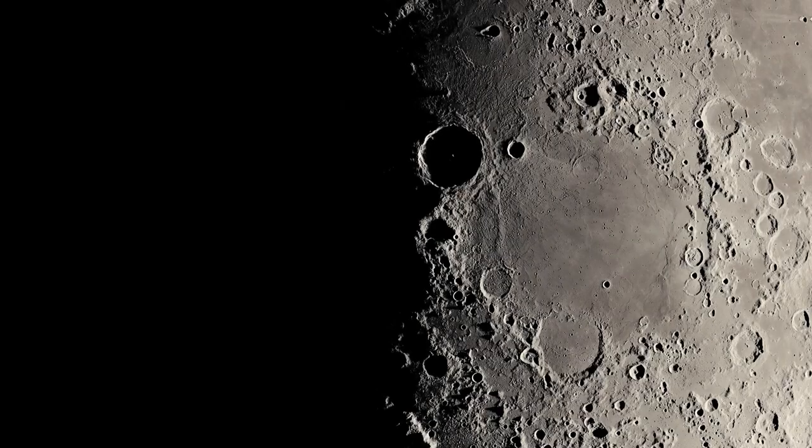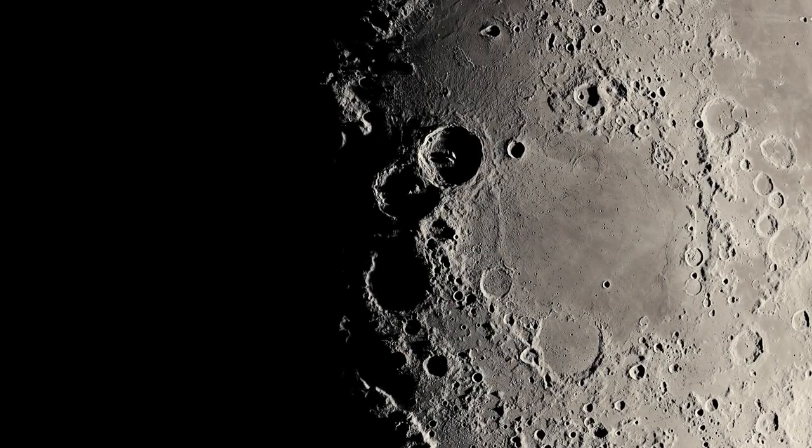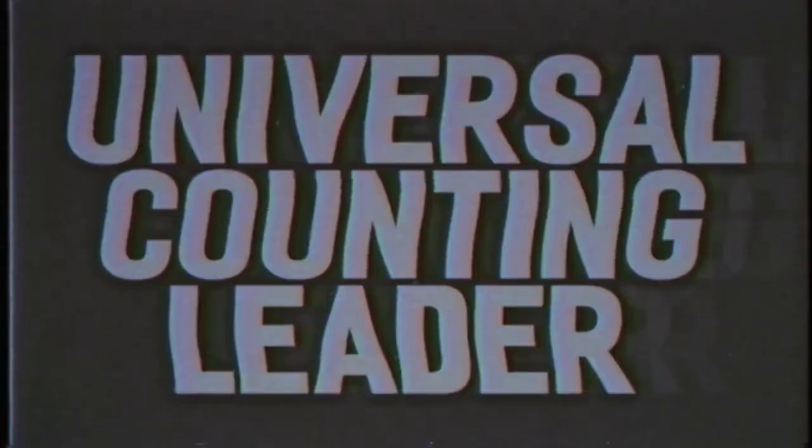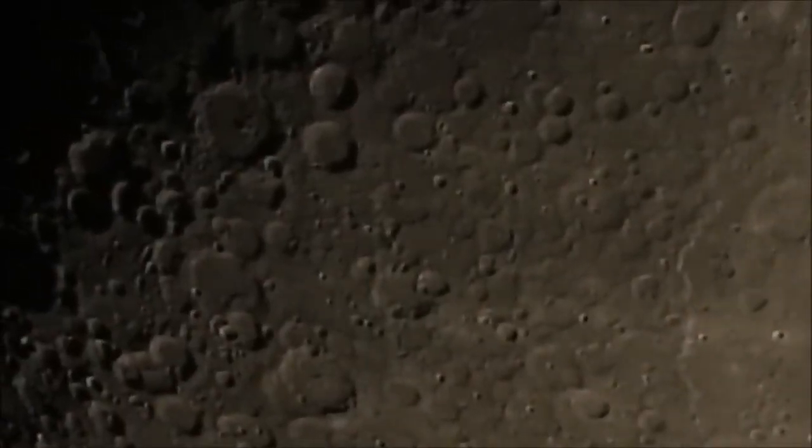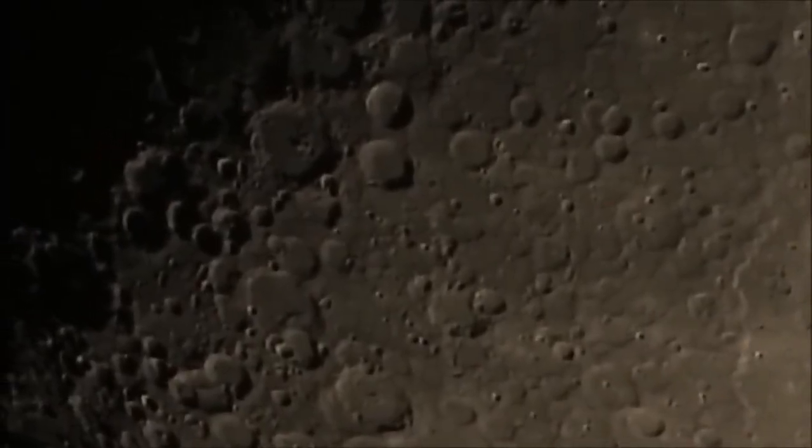Scientists now believe that life doesn't need a sun to thrive. It needs energy, water, and the right chemistry. These conditions could exist in countless places across the universe, from icy moons to rogue planets floating freely in space. The implications are staggering.